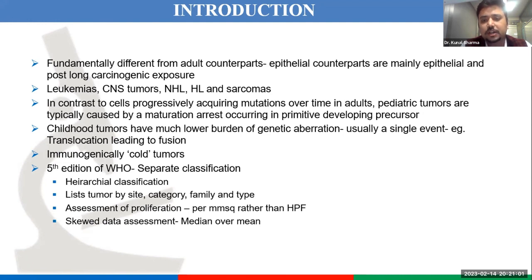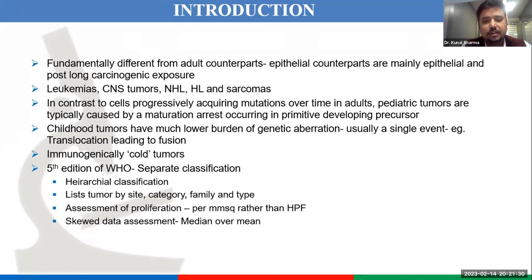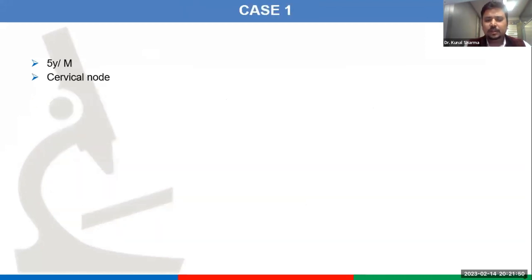These are immunologically cold tumors — the immunogenicity and immune response is much less in the pediatric age group. Because of these factors, the WHO fifth edition has incorporated a separate classification of pediatric tumors — a hierarchical classification listing tumors by site, category, family, and type. Proliferation assessment is now focused on per millimeter square rather than high power field. I'll follow a case-based approach to show how we diagnose the most common neoplasms Dr. Juhi has outlined.